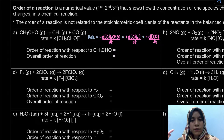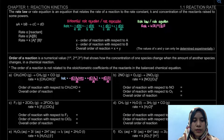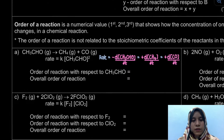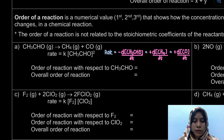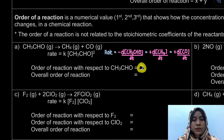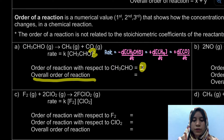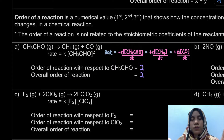Now, from the rate law, the concentration of the reactant is raised to the power of 2 — this is the order of reaction. In this case, it is 2. Why 2? Because it is given in the rate law itself. That does not depend on the stoichiometry. We look based upon our rate law. So the overall order of the reaction here is 2.